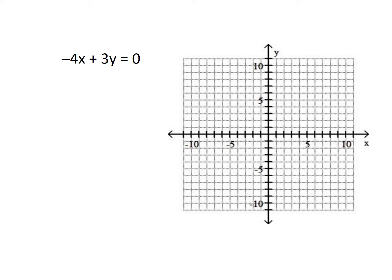We are tasked with graphing this equation: -4x + 3y = 0. We're looking at slope-intercept form, so we're going to get that equation into slope-intercept form, which is y = mx + b.